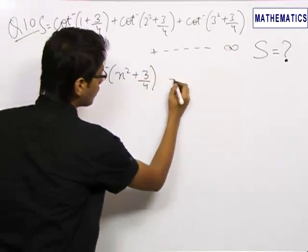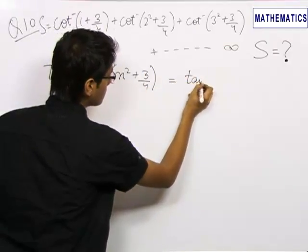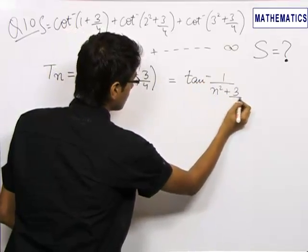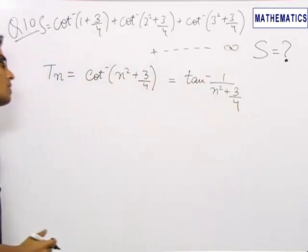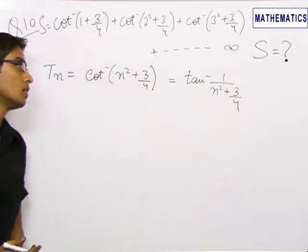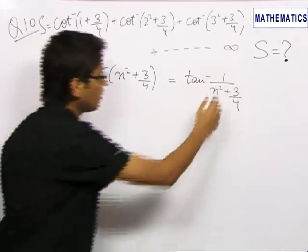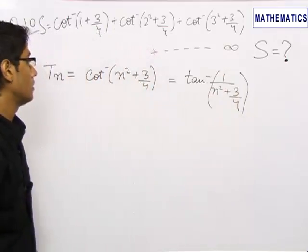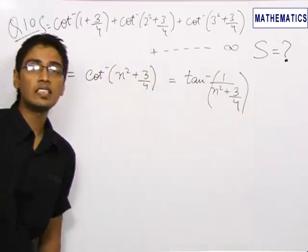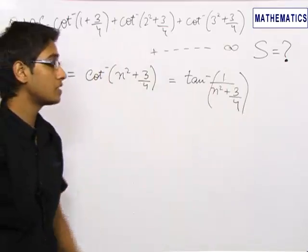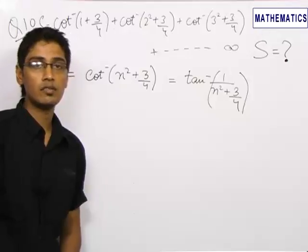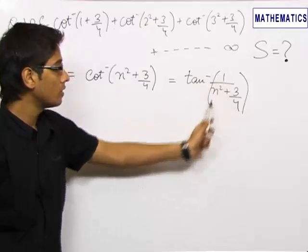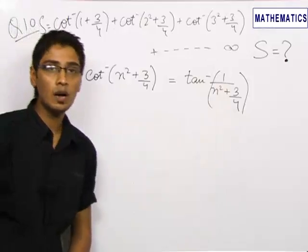We know that cot inverse of x is tan inverse of 1/x, so the nth term can be written as tan inverse of 1/(n² + 3/4). This is a complicated term, and the basic formula we know in terms of tan inverse is: tan⁻¹(a) − tan⁻¹(b) = tan⁻¹((a − b)/(1 + ab)). So we try to convert this whole expression into the form tan⁻¹((a − b)/(1 + ab)).